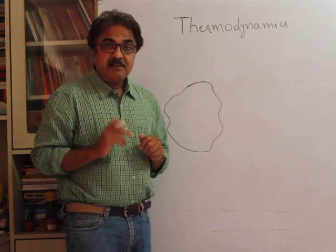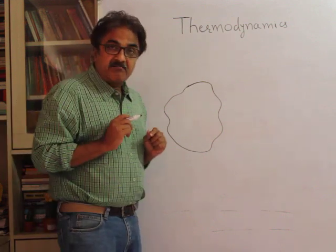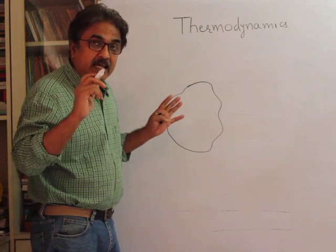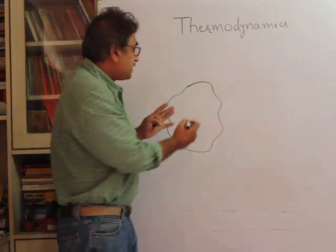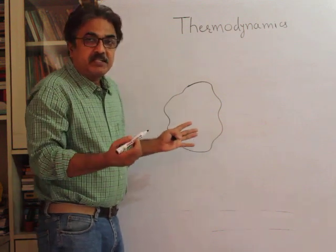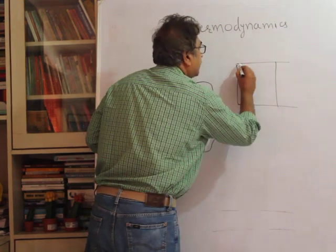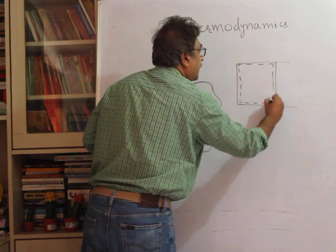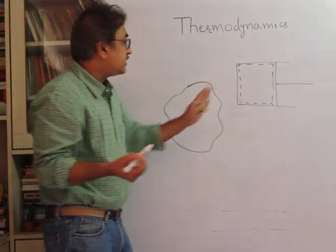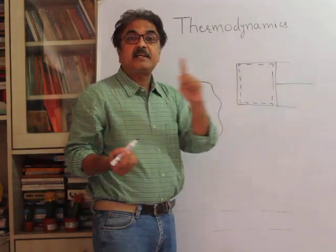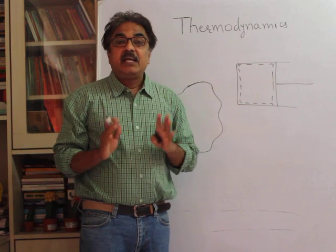Second, it has to have mechanical equilibrium. Mechanical equilibrium means there should not be any unbalanced force between the system and the surroundings. I have made a sketch with a piston and cylinder — there should not be any unbalanced force between the system and surroundings. And within the system also, there should not be any unbalanced force.